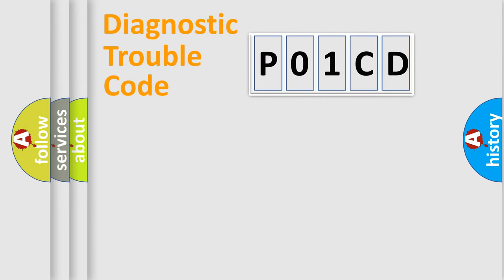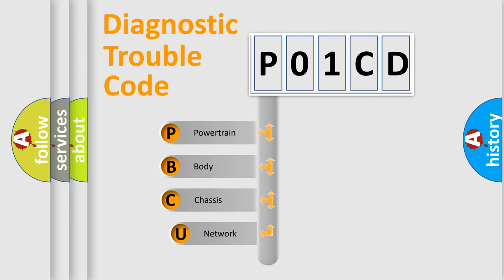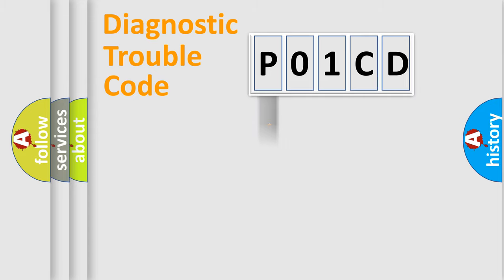Let's do this. First, let's look at the history of diagnostic fault code composition according to the OBD2 protocol, which is unified for all automakers since 2000. We divide the electric system of automobile into the four basic units: Powertrain, body, chassis, network.